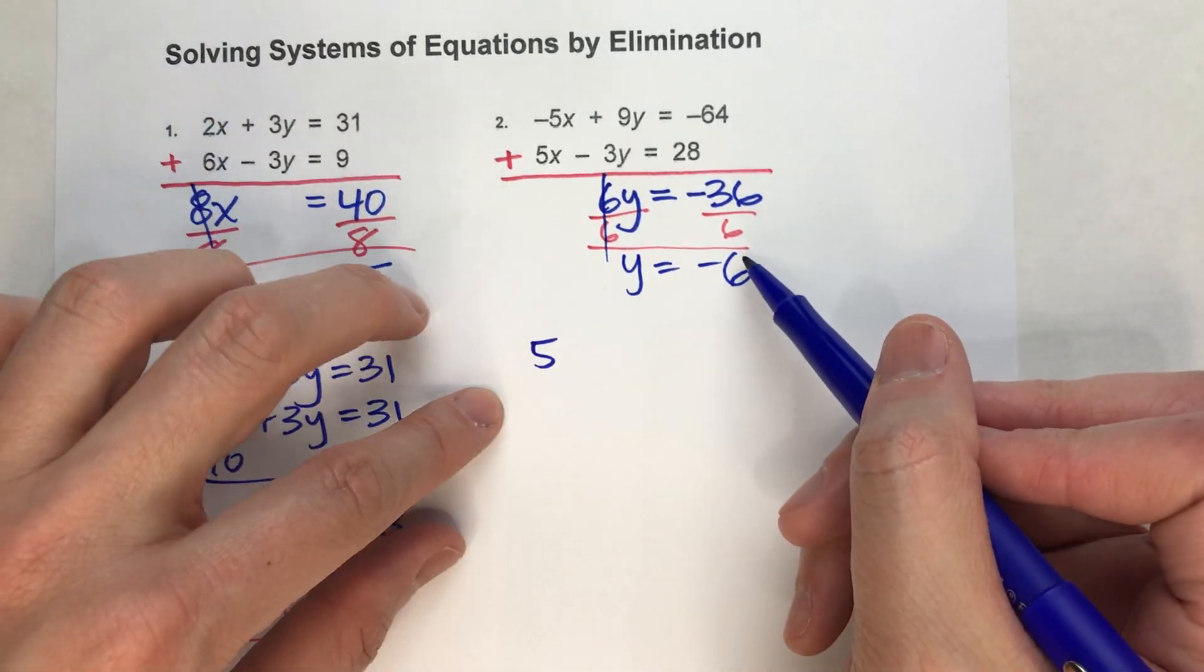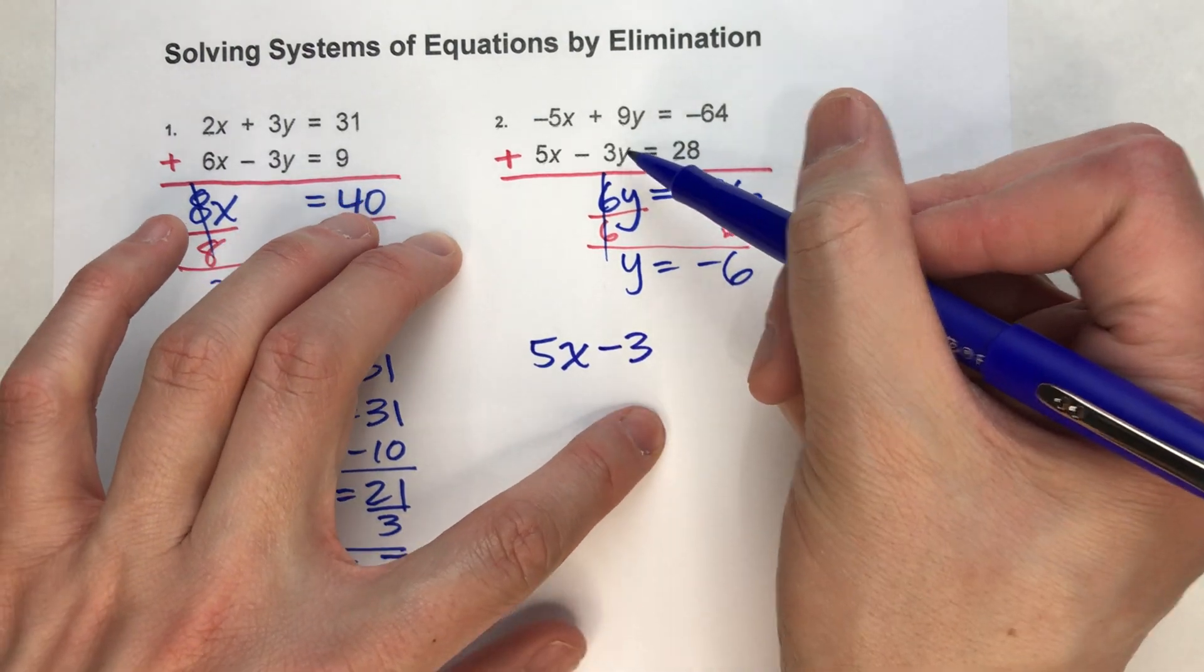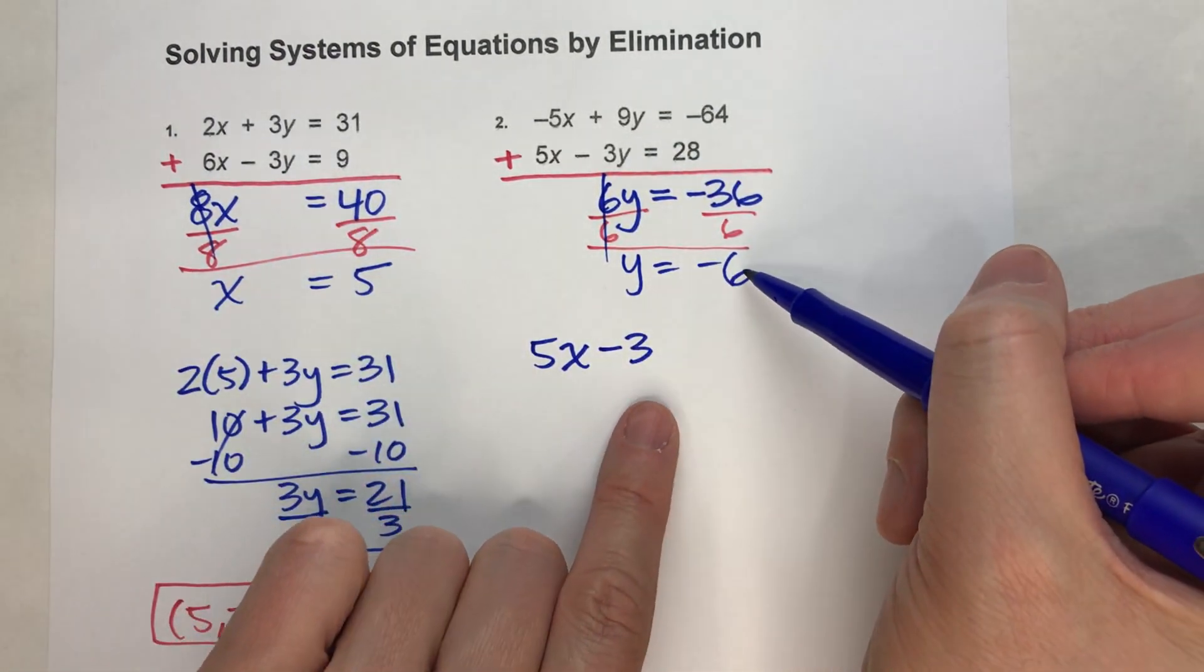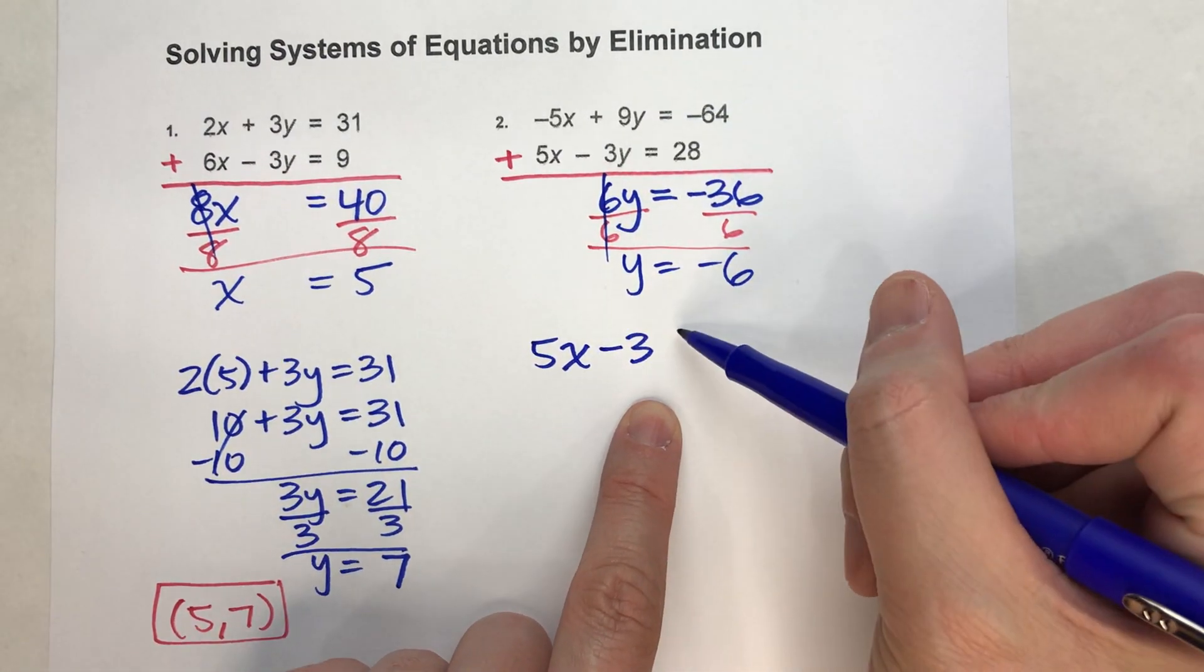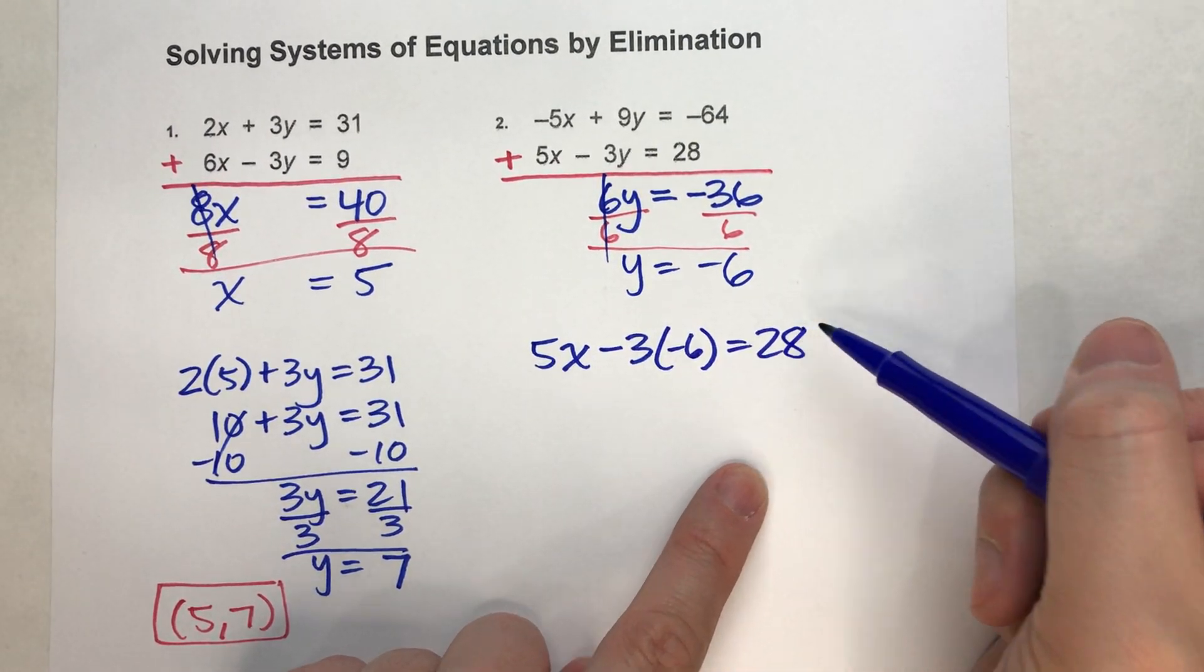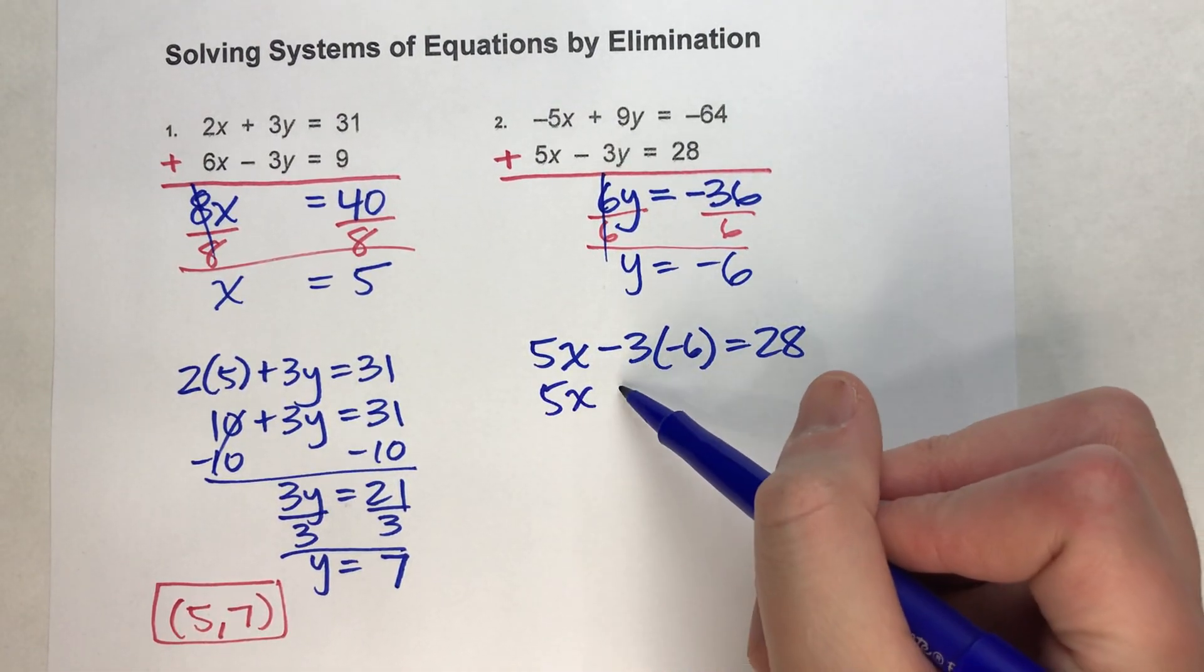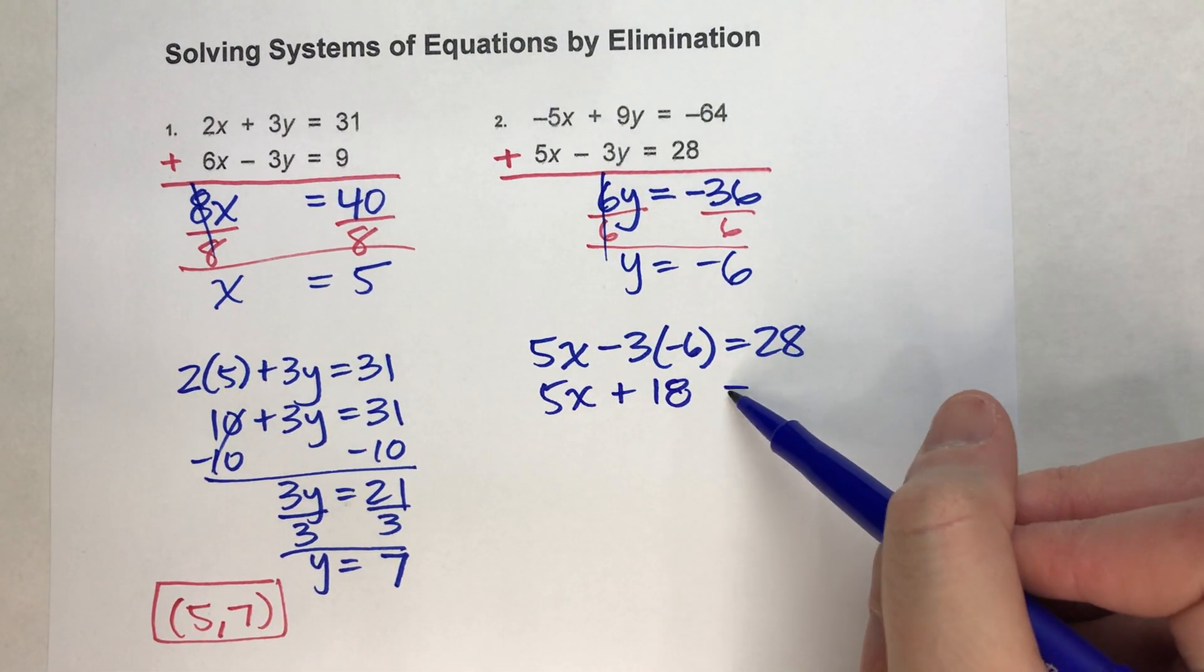5x minus, instead of 3 times y, because we got y this time, we're going to substitute negative 6 in for y, and that should equal 28. Simplifying this, this becomes 5x plus 18 equals 28.